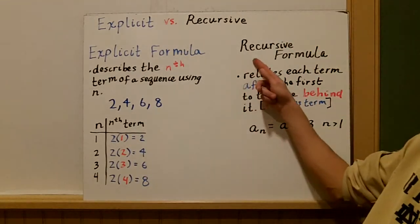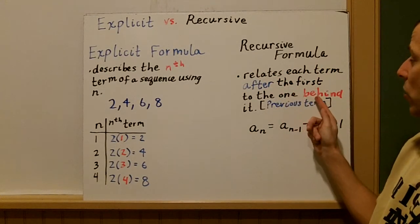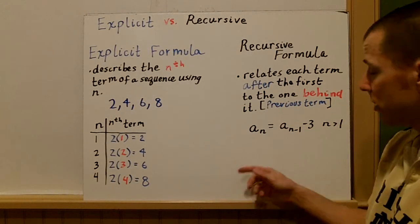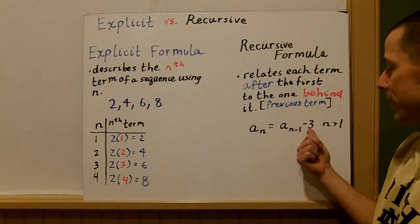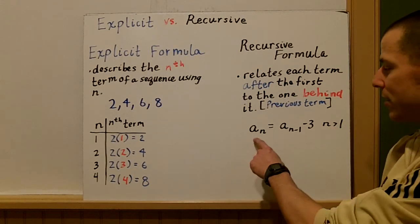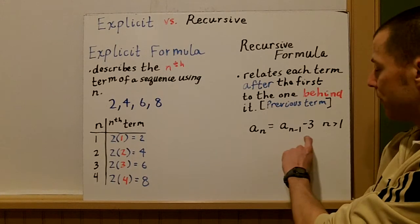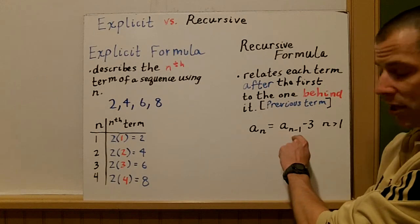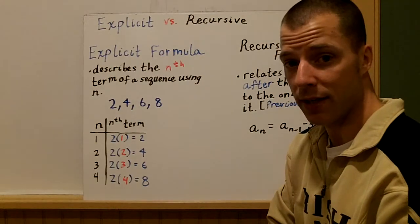When we talk about recursive, a recursive formula relates each term after the first term to the one behind it — the previous term. The notation looks like this: a sub n equals a sub n minus one plus or minus a number, where n is greater than one. This is just one example of a recursive formula — it's not the same for all of them. The key part is a sub n minus one: recursive formulas use the previous term to get to the next term.